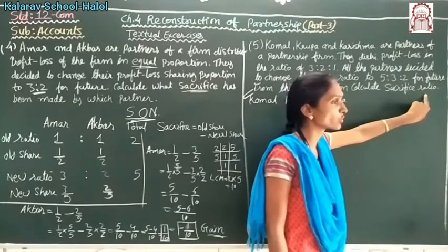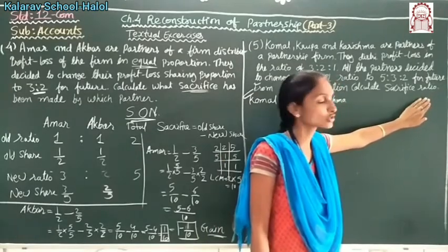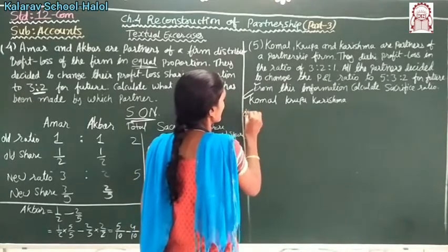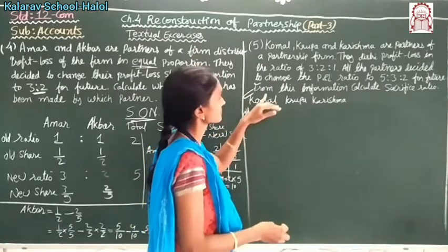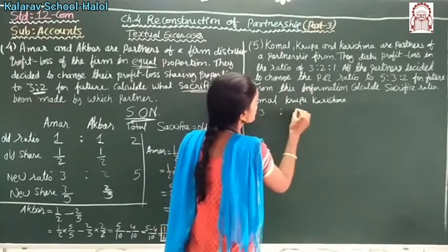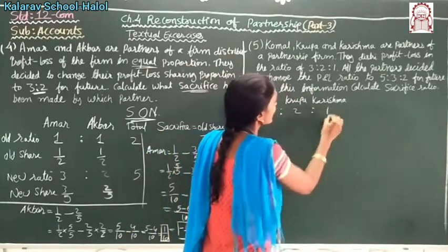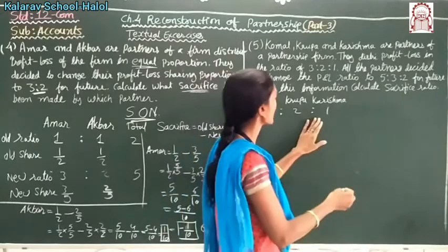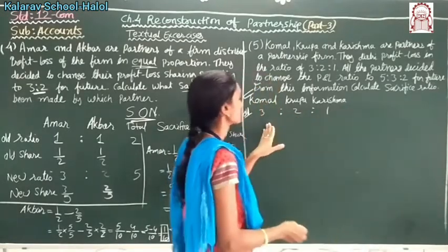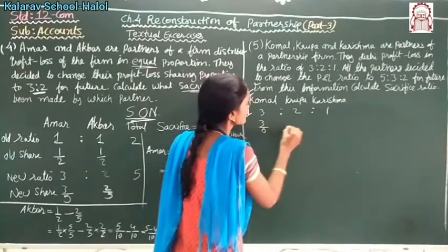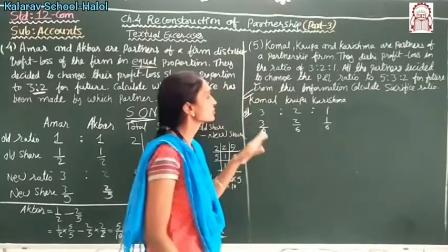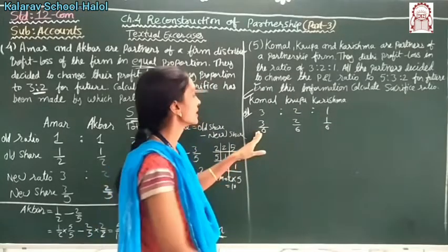From this information, calculate the sacrifice ratio. First we have to find the old share. Old ratio is 3 is to 2 is to 1, total is 3 plus 2 plus 1 equals 6. So old shares are 3 upon 6, 2 upon 6, and 1 upon 6.